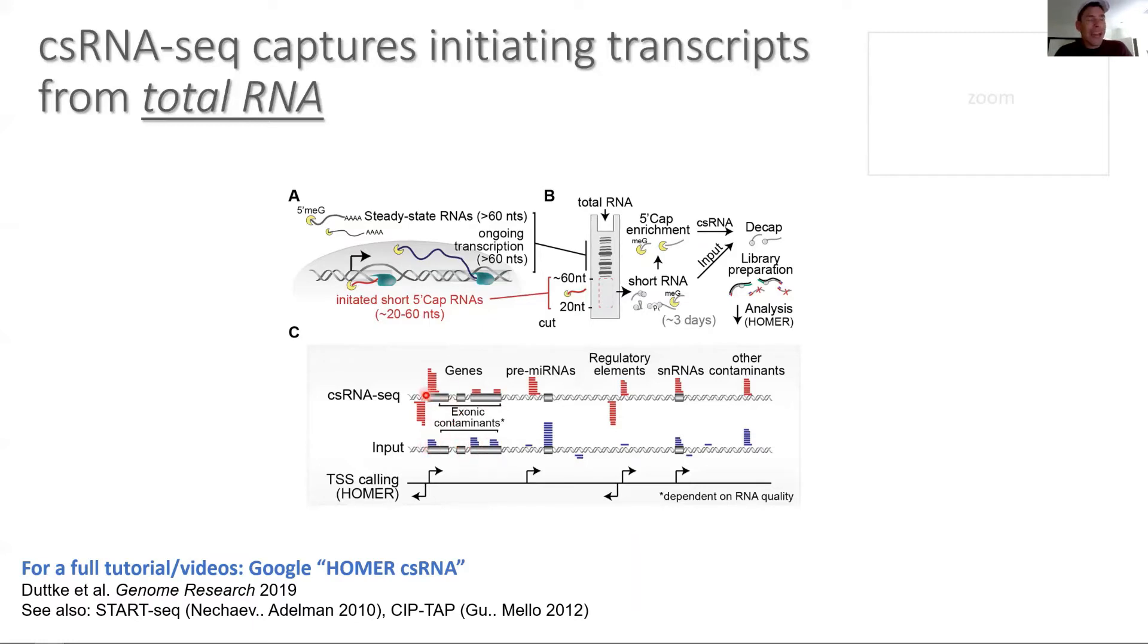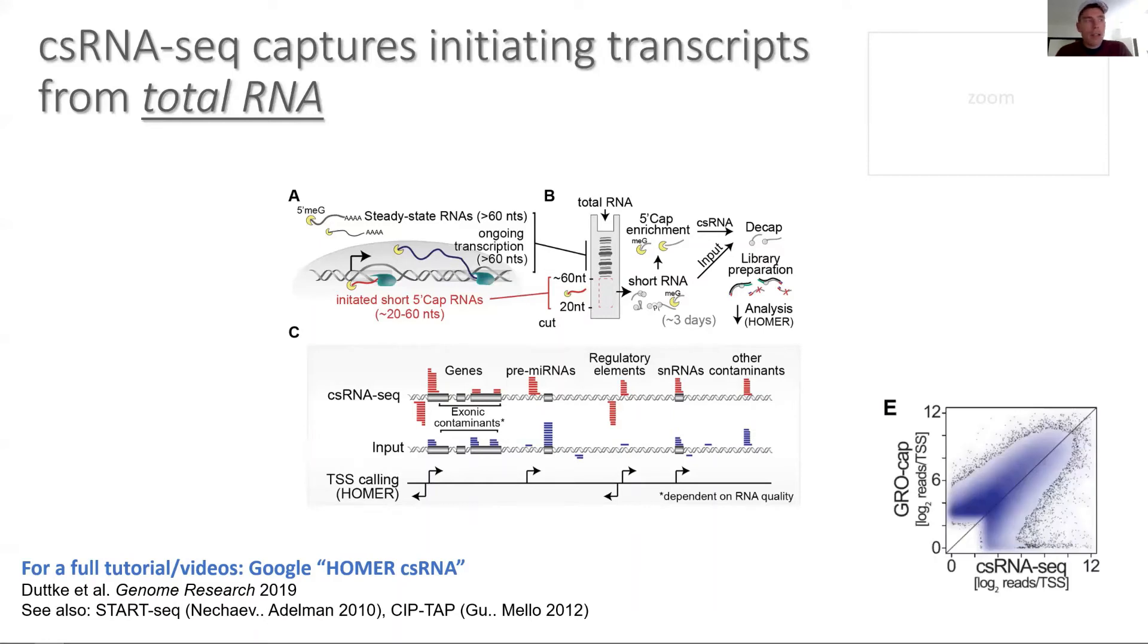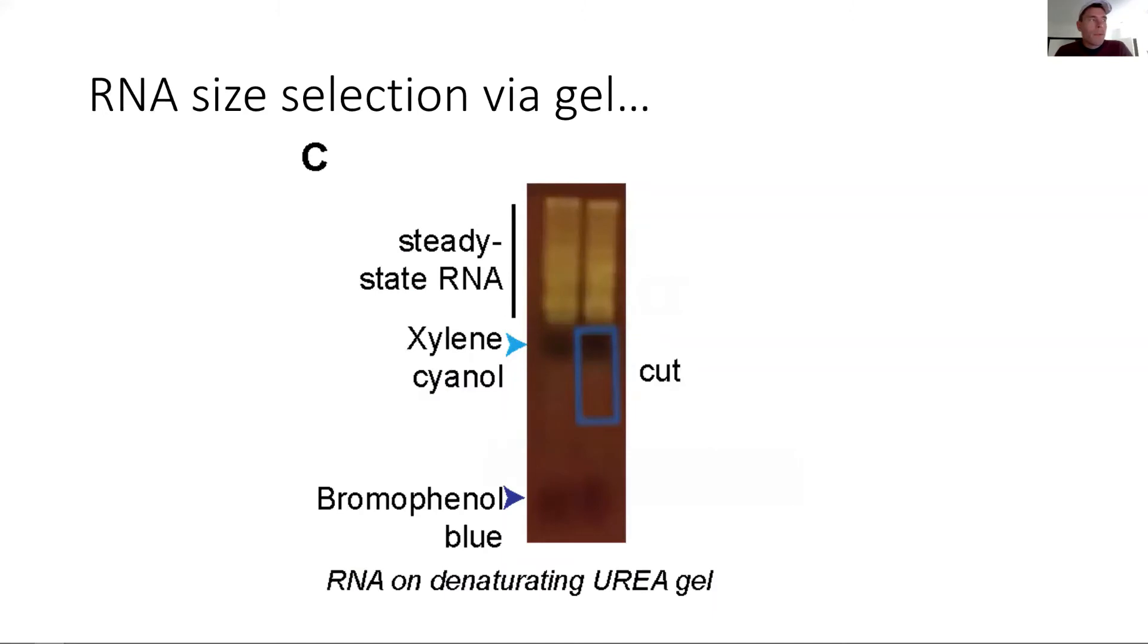We actually do differential peak calling between the CSRNAseq input and the CSRNAseq. For example, microRNA is heavily enriched in input, degradation products about equal, while those that are really vigorously enriched in CSRNAseq have a high correlation with nascent transcription start sites. How do we know that? There's actually a really good correlation between CSRNAseq and real nascent methods such as GRO-seq or proCap.